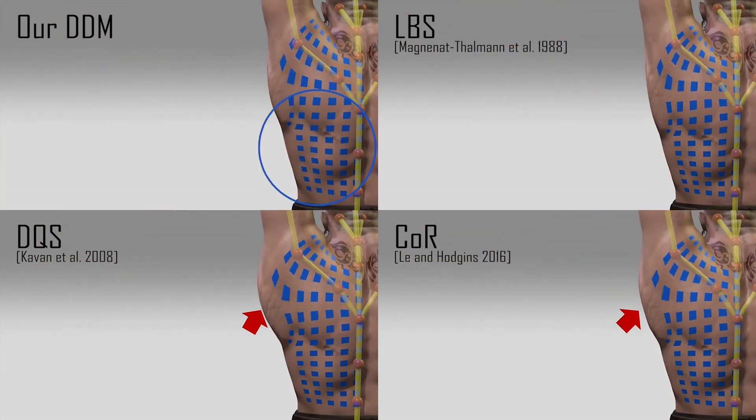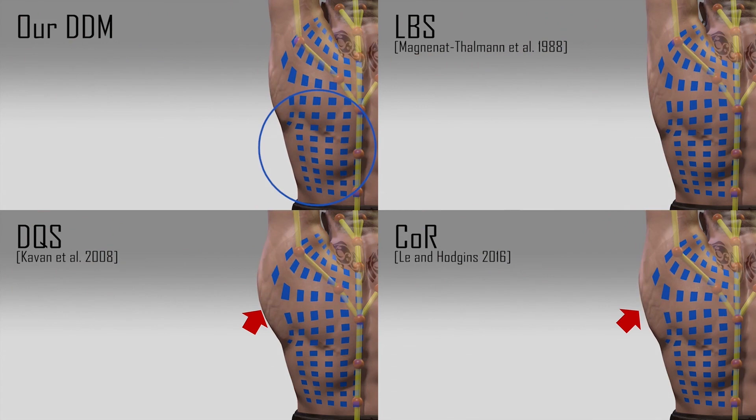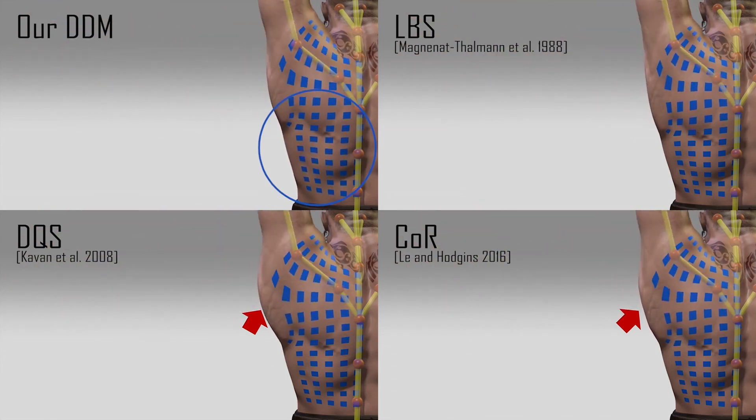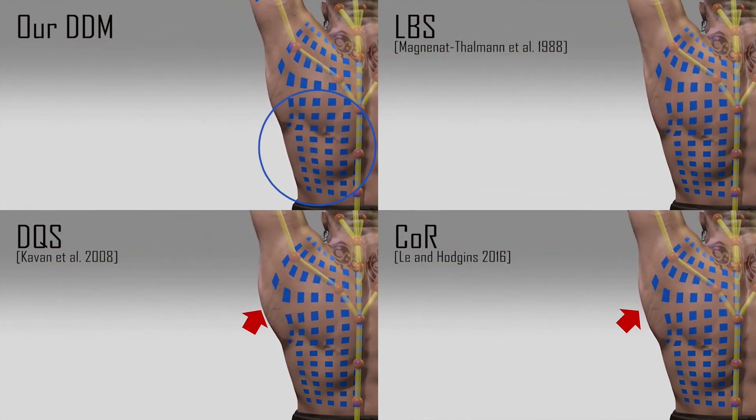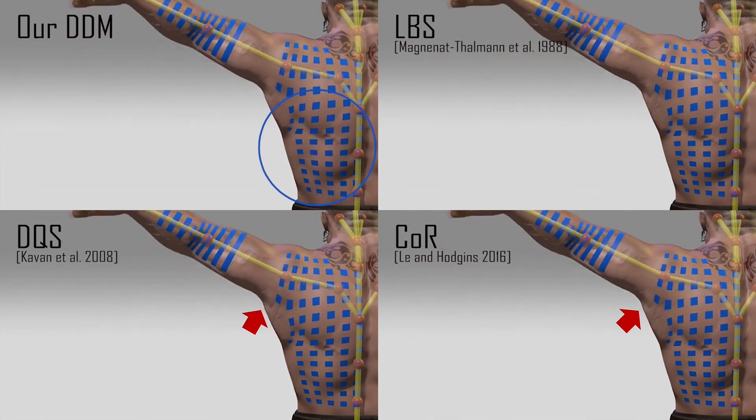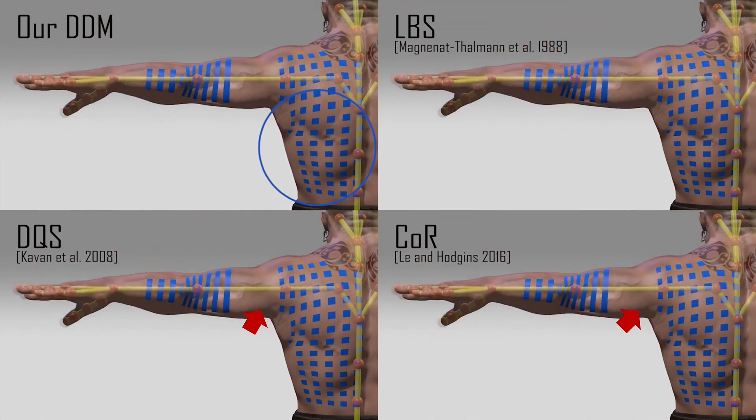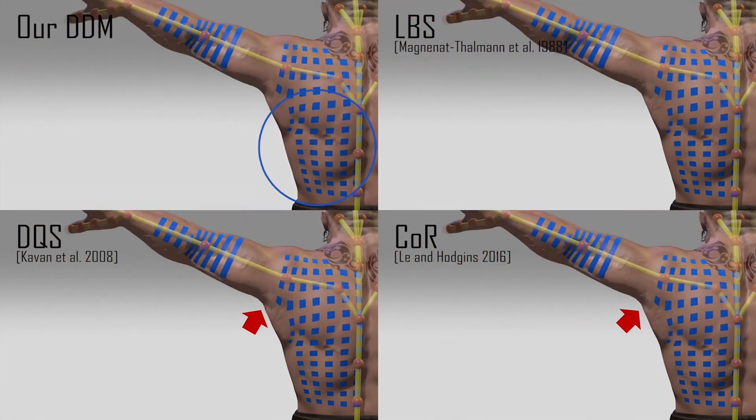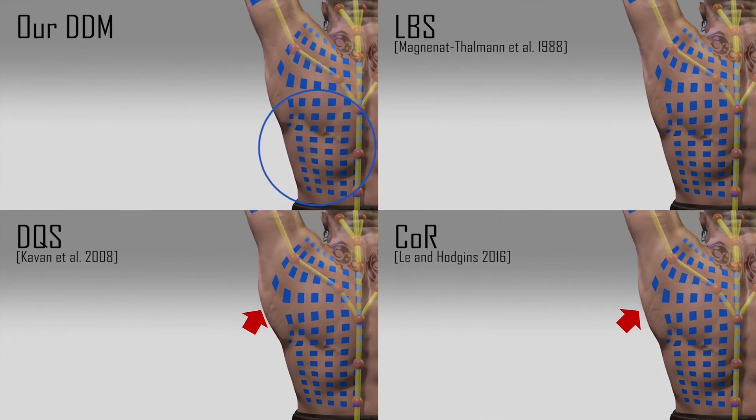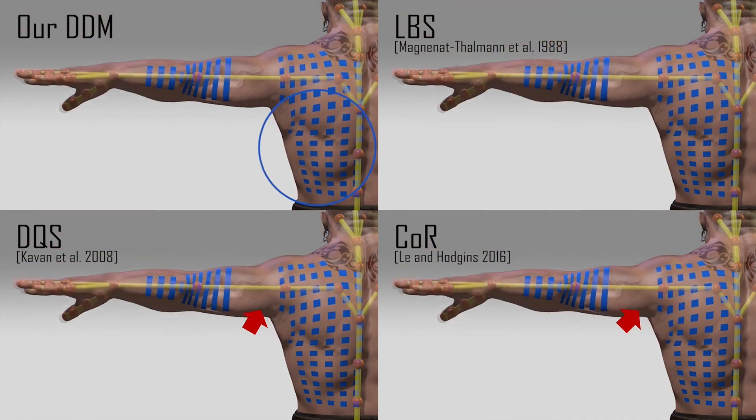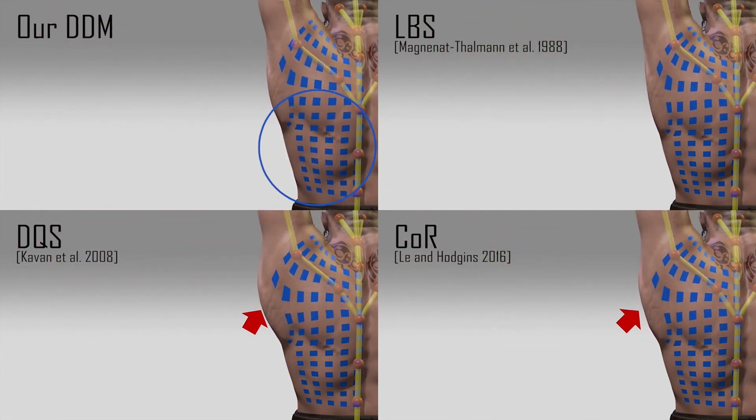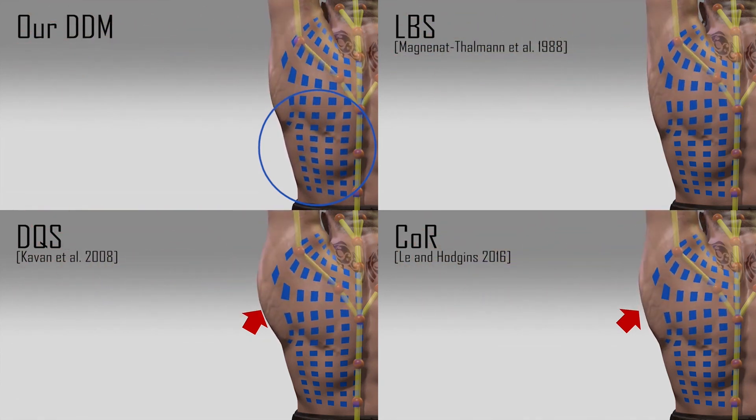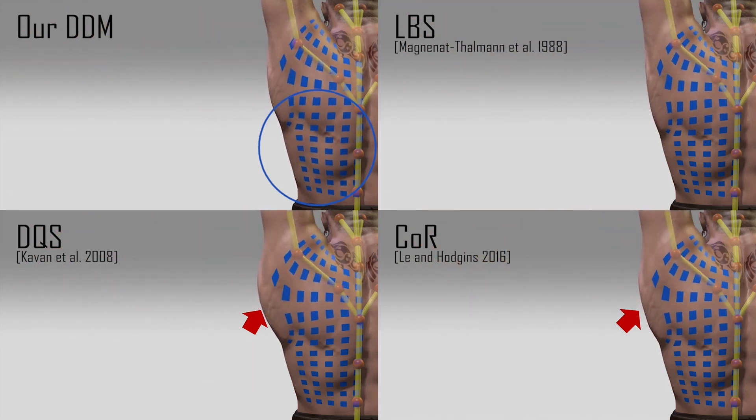Here's the last example that I show skin sliding on the lower back region. For other methods, it cannot help skin movement in this region because painting the skin weight of the arm down to this region will lead to more bulging. So you can see that even with influence of the arm stop very close to the shoulder, dual quaternion and optimized center rotation skinning still suffer with bulging. If we paint the weight further, there will be more artifacts.